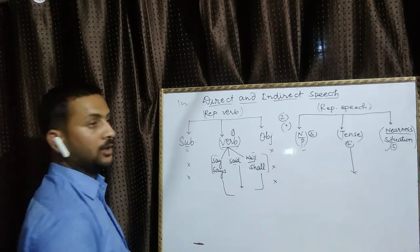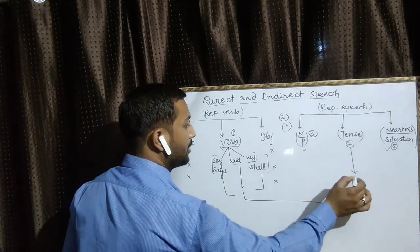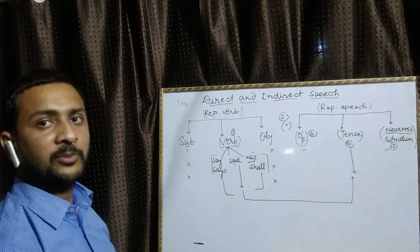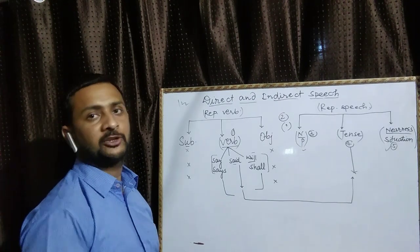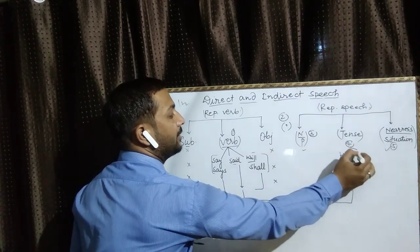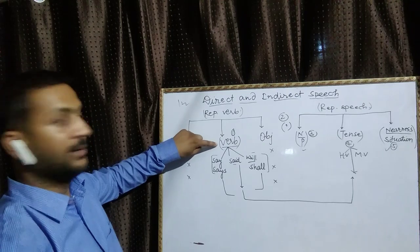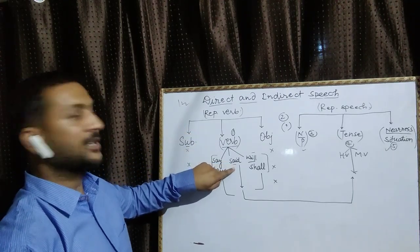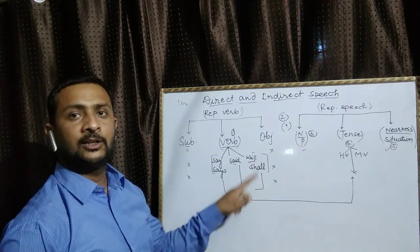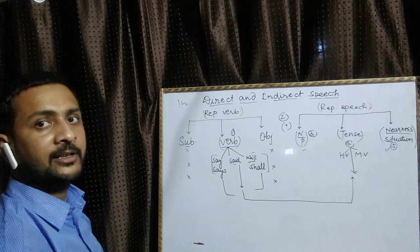जब reporting verb said, told, या asked हो — यानी past tense में हो — तो हम tense को पूरी तरह change करते हैं: present को past में, और past को past perfect में। Tense को दो series में divide करते हैं: helping verb और main verb। यह सबसे important part है direct indirect के अंतर्गत।